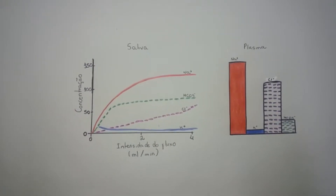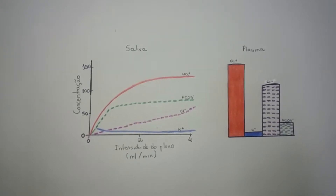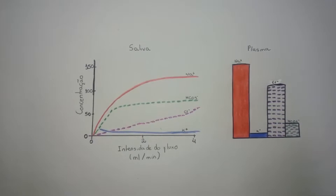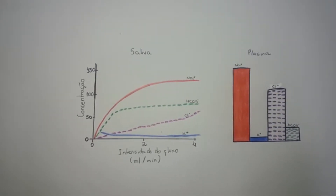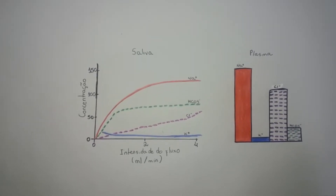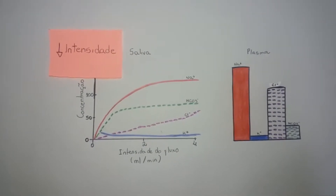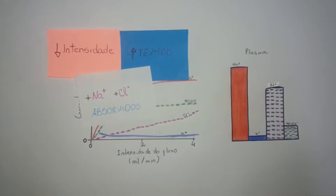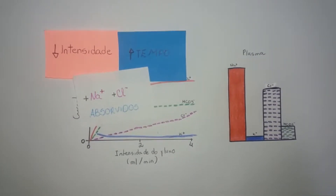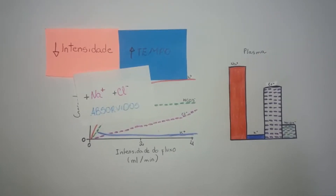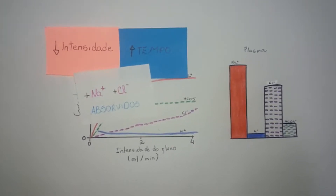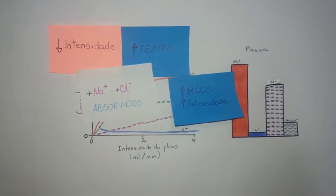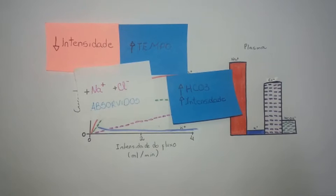O mecanismo fluxo-dependente das alterações nas concentrações da saliva é baseado no tempo que essa permanece em contato com as células ductais. Em intensidades elevadas de fluxo, as células ductais terão menos tempo para modificar a saliva. Já nas baixas taxas de fluxo, haverá mais tempo para modificar a saliva. Em baixa intensidade de fluxo, mais sódio e cloreto serão absorvidos, reduzindo suas concentrações, enquanto o potássio é secretado, aumentando sua concentração. Com o bicarbonato, o mecanismo é diferente: sua concentração na saliva aumenta quando a intensidade do fluxo também aumenta, pois a secreção de bicarbonato é estimulada quando a produção de saliva é estimulada.